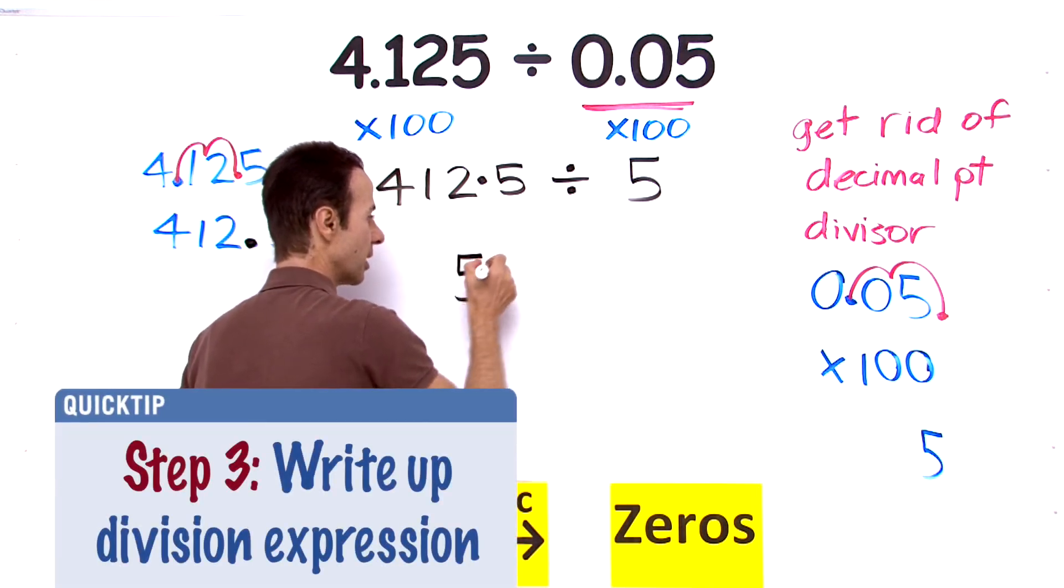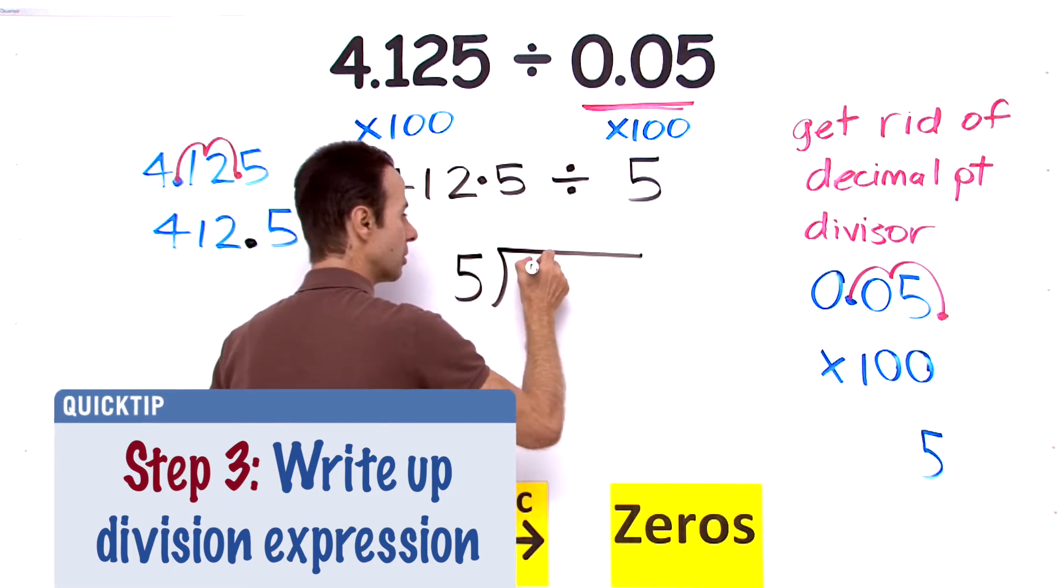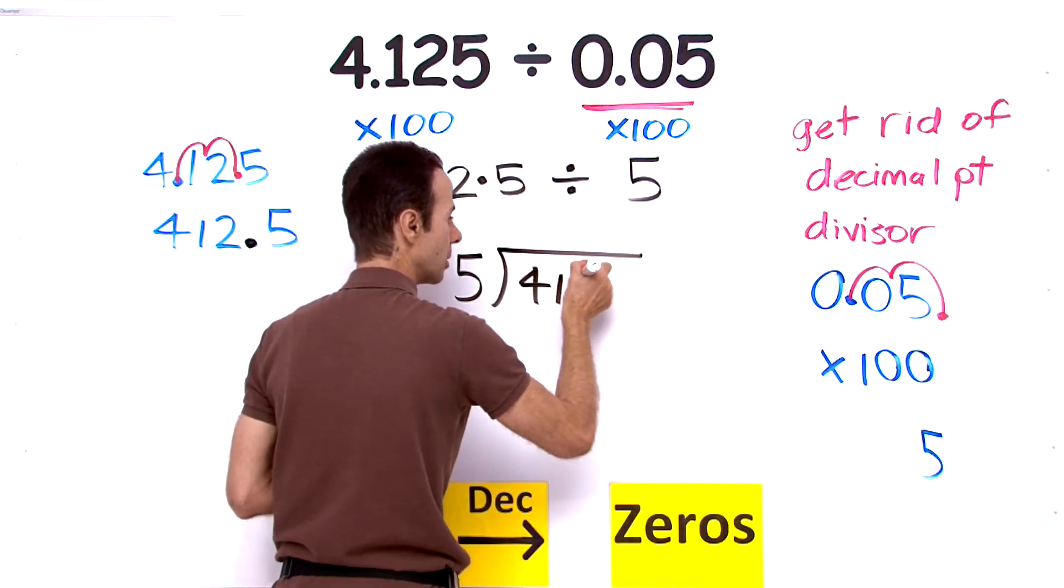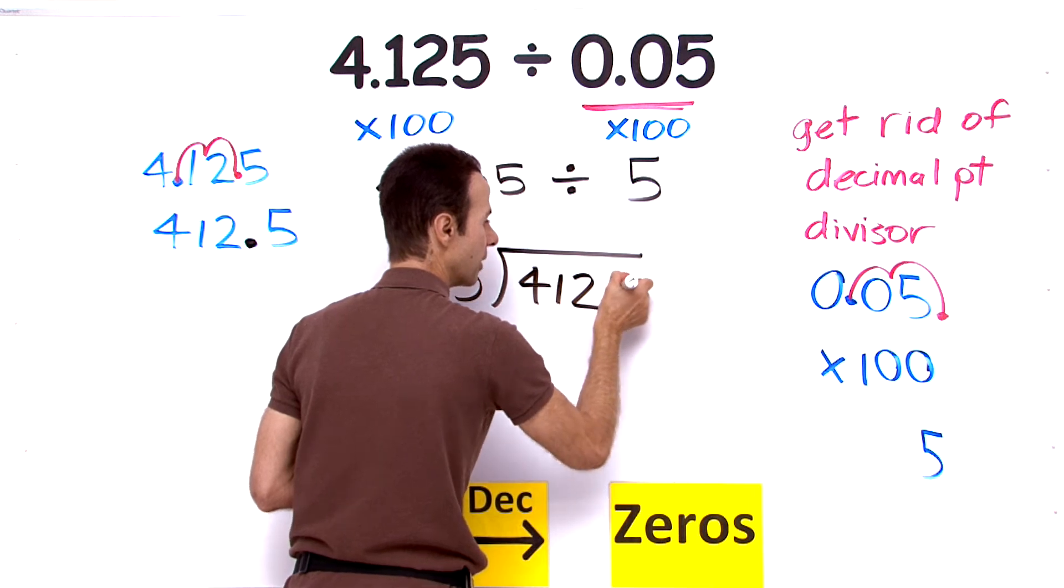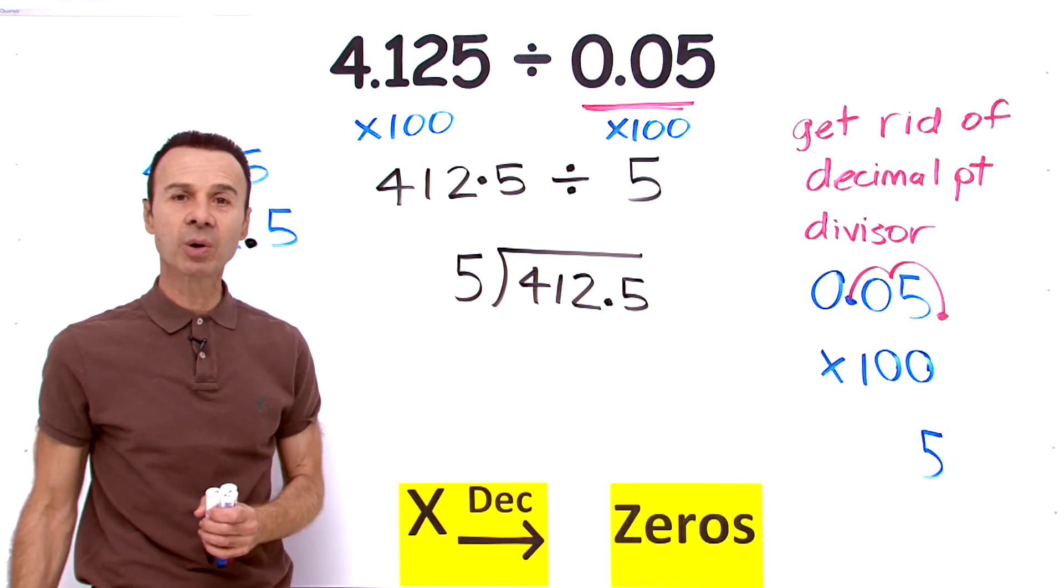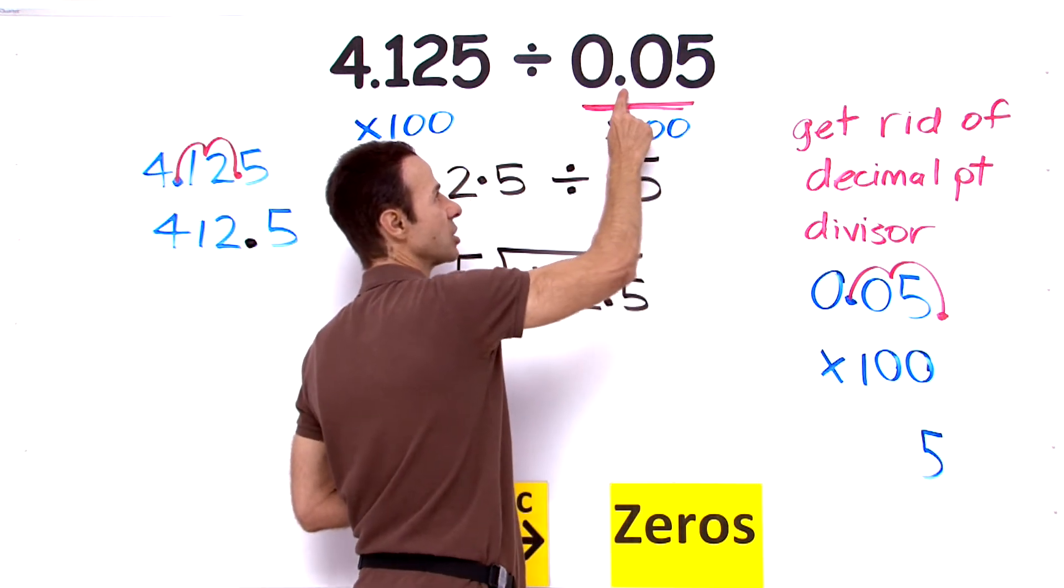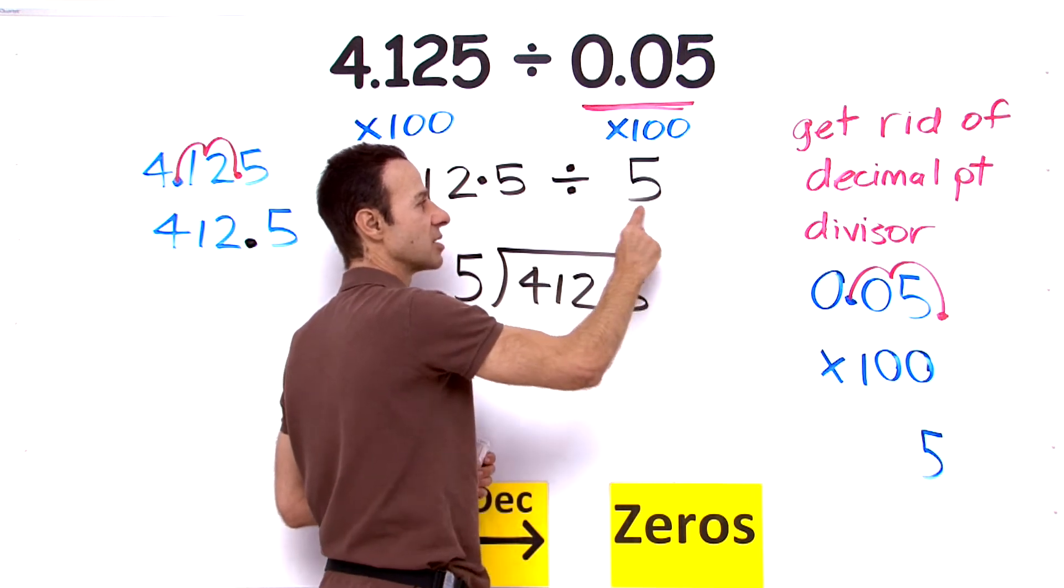So let's go ahead and do this division now. I'm going to put 5 as the divisor into the number here, 412.5. Now it does not matter that this side has got a decimal point in it. We don't mind. It's easy to work with. What we need to do is eliminate the decimal point on the right-hand side, which we did, and there is no decimal point.